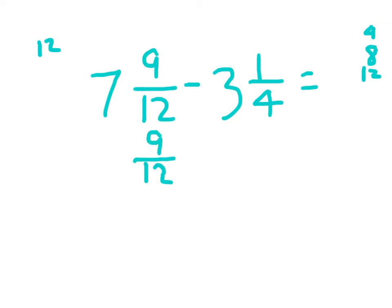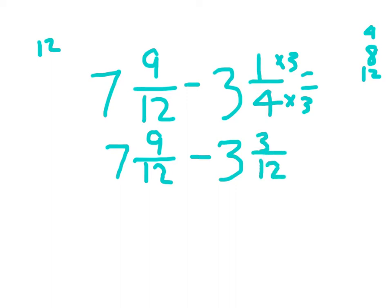We have seven and nine-twelfths minus three and how many twelfths? We do the same thing in the numerator and denominator: one times three is three, four times three is twelve. So the equation is seven and nine-twelfths minus three and three-twelfths. Nine-twelfths minus three-twelfths is six-twelfths, and seven minus three is four. Is four and six-twelfths in simplest form? Nope.